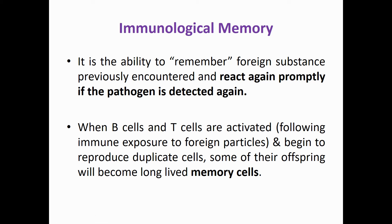Once activated, certain B cells will differentiate into memory B cells and plasma B cells. T cells also differentiate — some into memory T cells and some into different types such as T helper cells, cytotoxic T cells, or suppressor T cells. These memory cells, once formed, remember that foreign particle exposure.